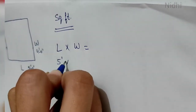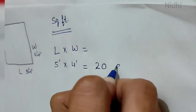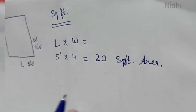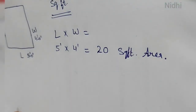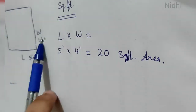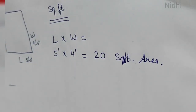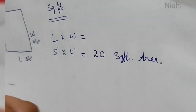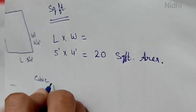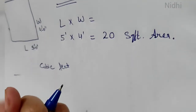Five feet multiplied by four feet gives us 20 square feet area. For square feet we need two dimensions — length and width — but when we have to calculate cubic meter or cubic feet, we need three dimensions.